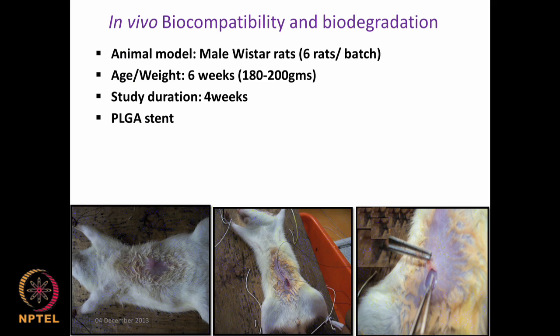These polymers are placed intraperitoneally and then sewed back, and after 30 days they are removed. The biodegradation of the polymer can be studied using weight loss, and by looking at the tissues one can look at whether the polymer causes any cytotoxicity or whether it is harmless to the surrounding tissues, and also look at systemic toxicity - whether the polymer in those 30 days causes toxicity to the system as well.